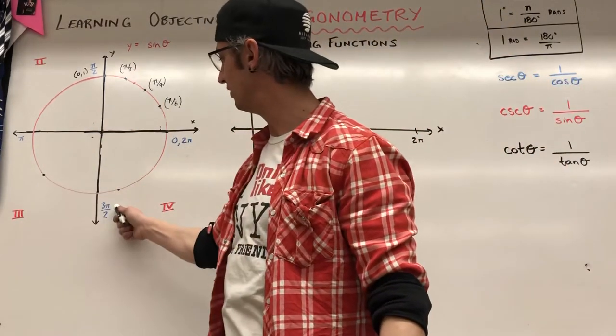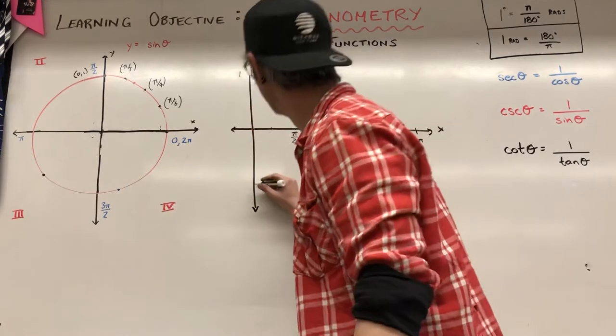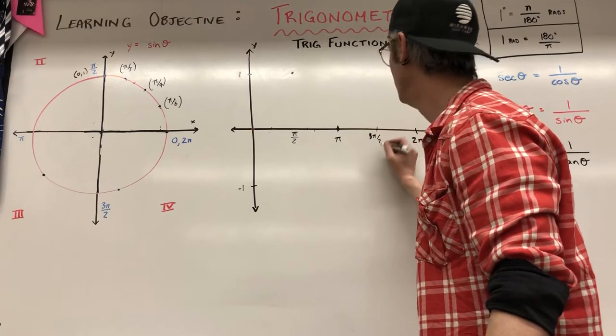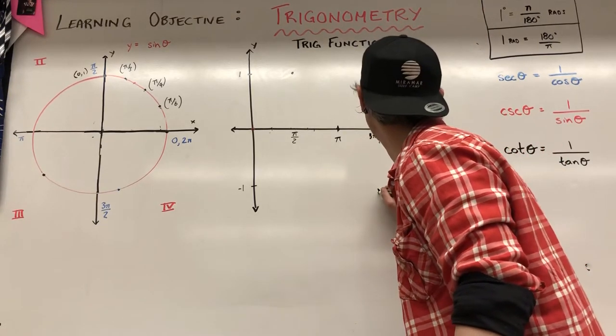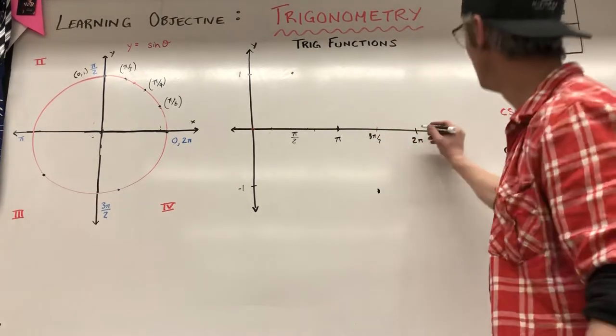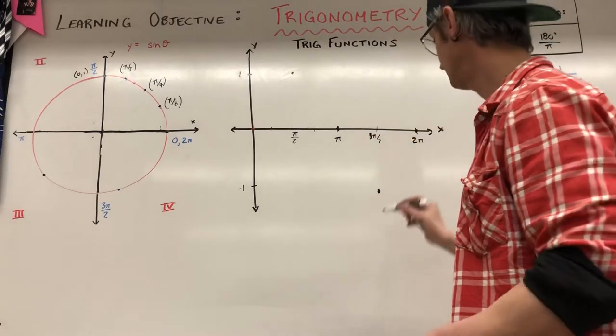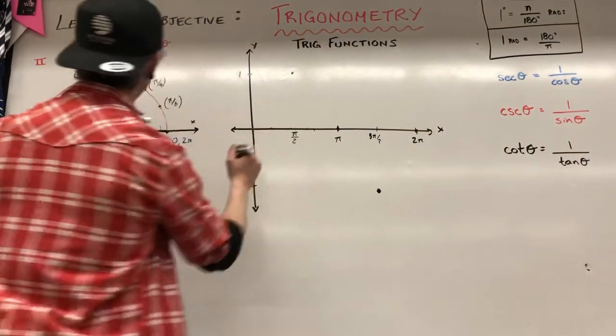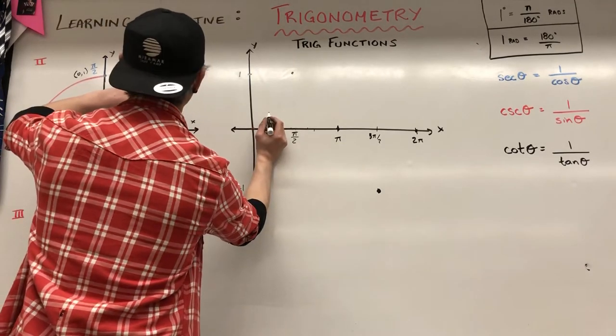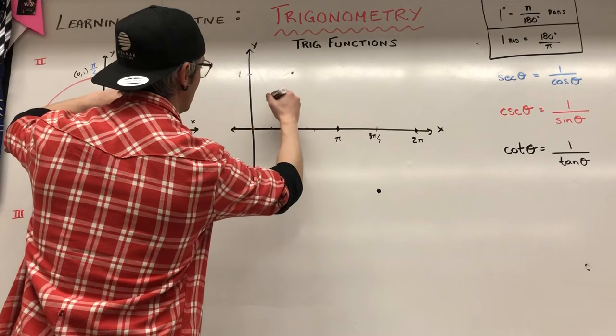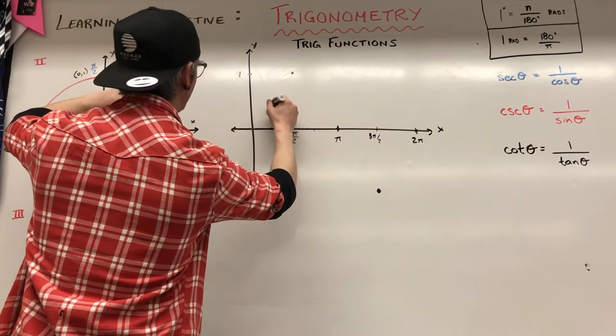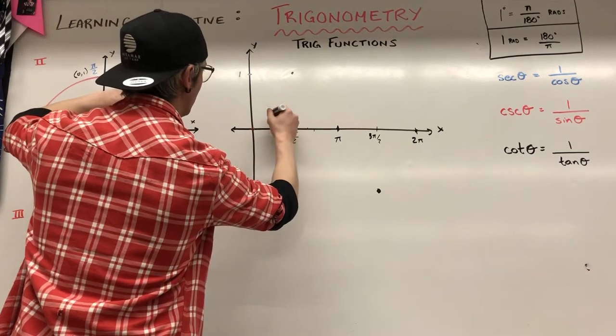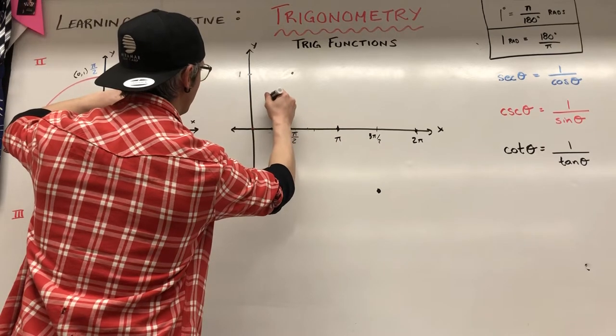At x equals three pi over two, my y becomes negative one. So at three pi over two, I'm at negative one. And at two pi, I go back to zero. So I have some other points inside. At pi over six, I'm at one over two. So I'm at about one half at pi over six.